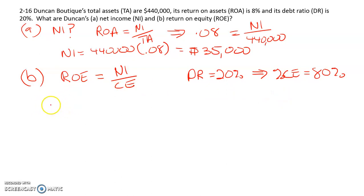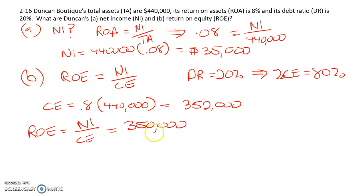So our common equity is going to be 0.8 times our total assets. 80% of total assets are common equity, so $352,000. Our ROE is net income divided by common equity, so that's $35,000 divided by $352,000.